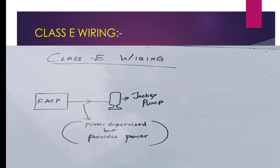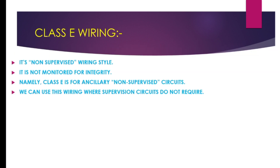Class E wiring is not monitored for integrity — namely, Class E is for ancillary non-supervised circuits. For example, non-supervised circuits used with circuits that provide power to an air compressor or jockey pump for a large dry sprinkler system. We can use this wiring where supervision circuits are not required. Class E wiring does not supervise anything.